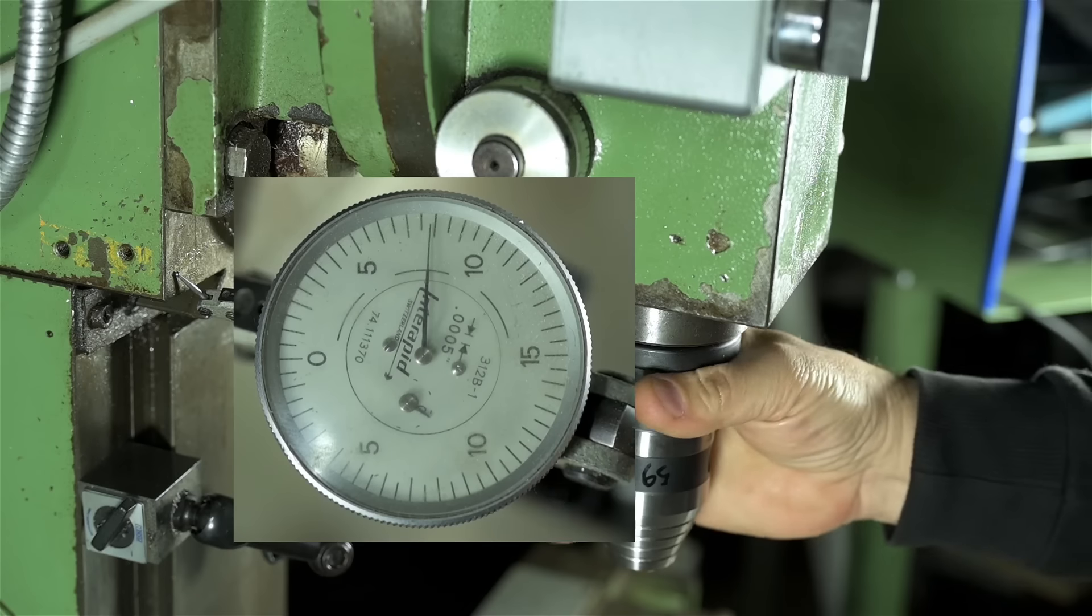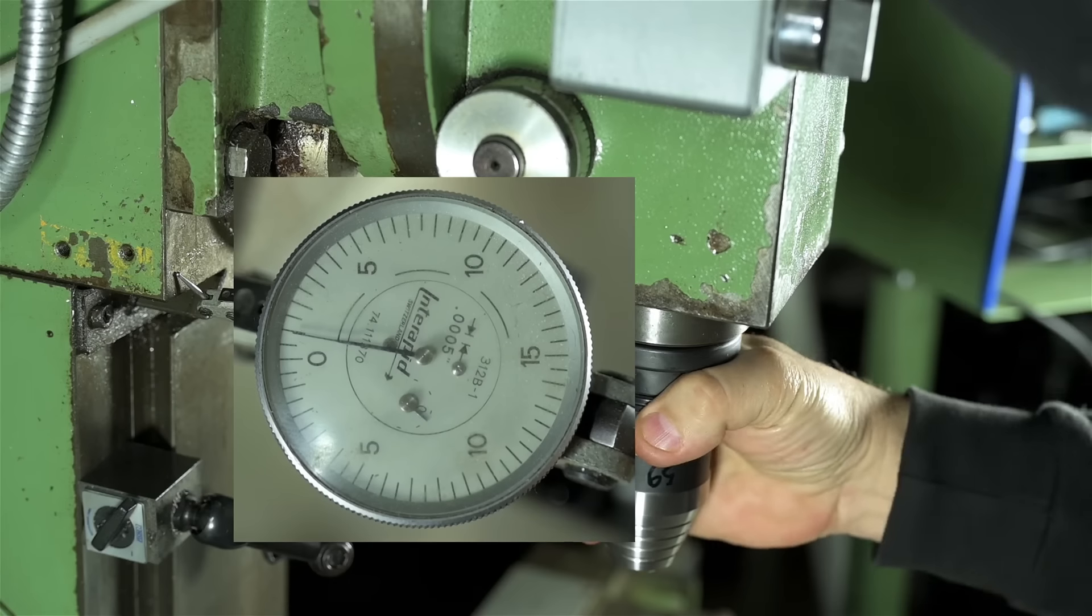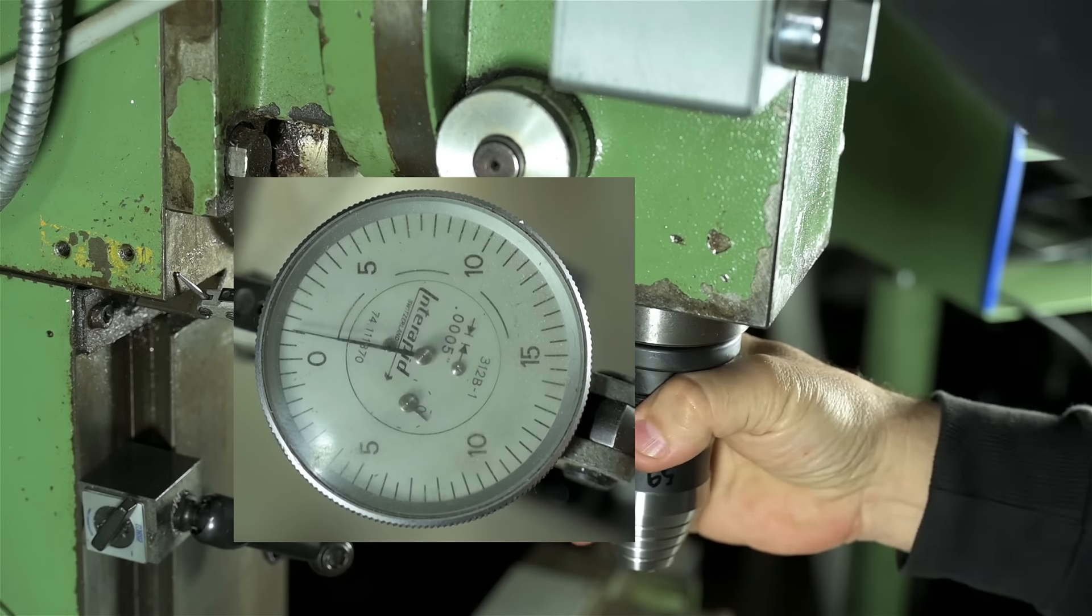Although not necessarily the end of the world for a manual milling machine, it's absolute murder on a CNC. This backlash means parts don't come out the right size, or maybe even the right shape.